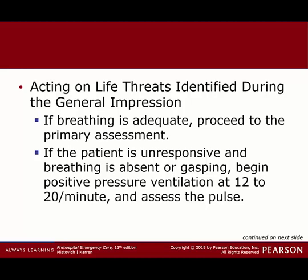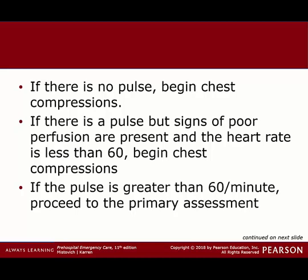Ultimately, what we're trying to do is identify things early on so we can act on life threats during the general impression. If breathing is adequate, go to the primary assessment — your ABCs — and go from there. If they're unresponsive or gasping, positive pressure ventilation at least 12 to 20. Remember, 30 to 60 is normal for a neonate in the first couple months of life — they're going to need 30 to 40 breaths per minute. Then assess for pulse; if there's no pulse, begin chest compressions.